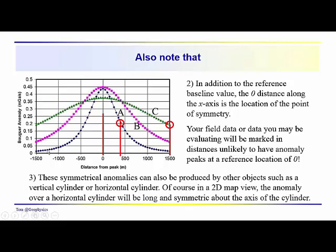So the anomaly, again, you would look at the shape of the anomaly. You would take a transect through that anomaly which you would analyze. You would plot it up in terms of the spatial extent that you see on your survey map, and you would locate zero with the location of the peak of the anomaly. Another thing that you should realize is that these symmetrical anomalies could be produced by other objects - a vertical cylinder, for example, or a horizontal cylinder. And in 2D map view, of course, if you had a horizontal cylinder, it would be obvious because it would be a long and symmetric anomaly, symmetric about the axis of the cylinder. We'll talk more about non-uniqueness later on.